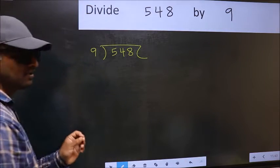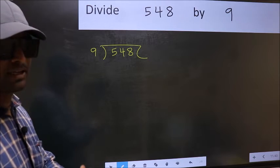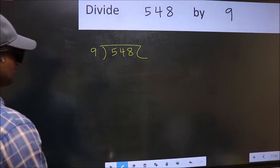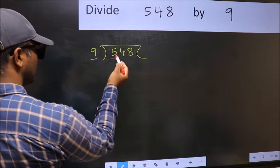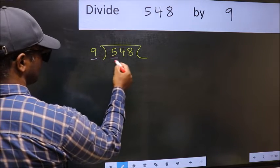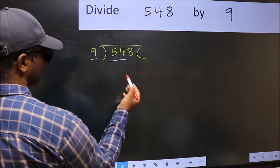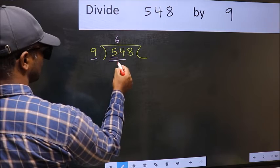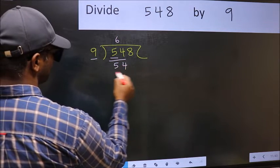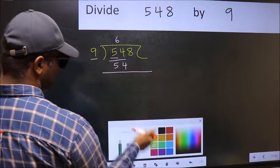This is your step one. Next, here we have 5 and here 9. 5 is smaller than 9, so we should take two numbers: 54. When do we get 54 in 9 table? 9 times 6 is 54.